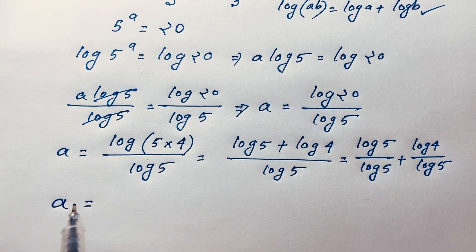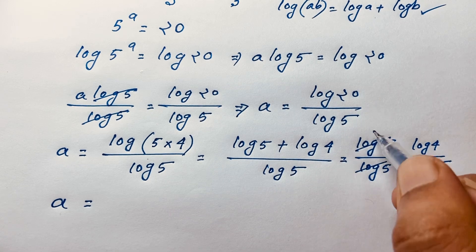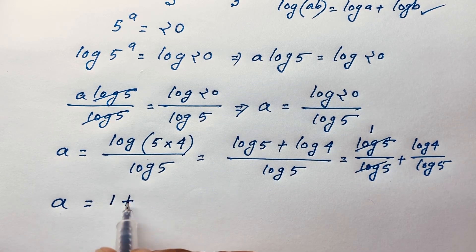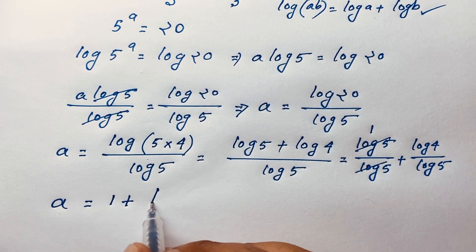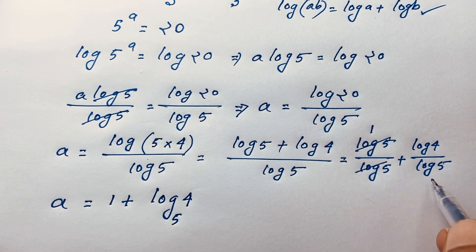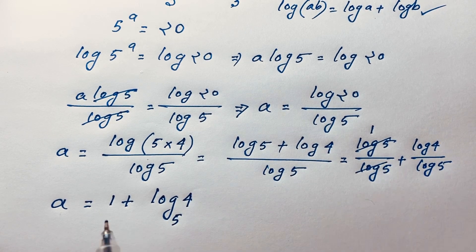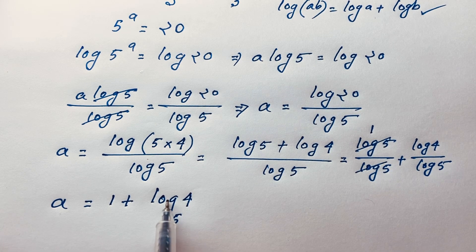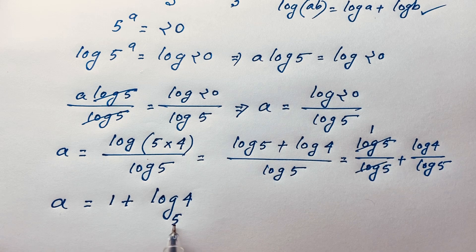The log 5 over log 5 cancels to 1, so A equals 1 plus log 4 base 5. Since log 4 base 5 can also be written as log of 2 squared base 5, the exponent 2 moves to the front: A equals 1 plus 2 log₅2. This is our final answer.